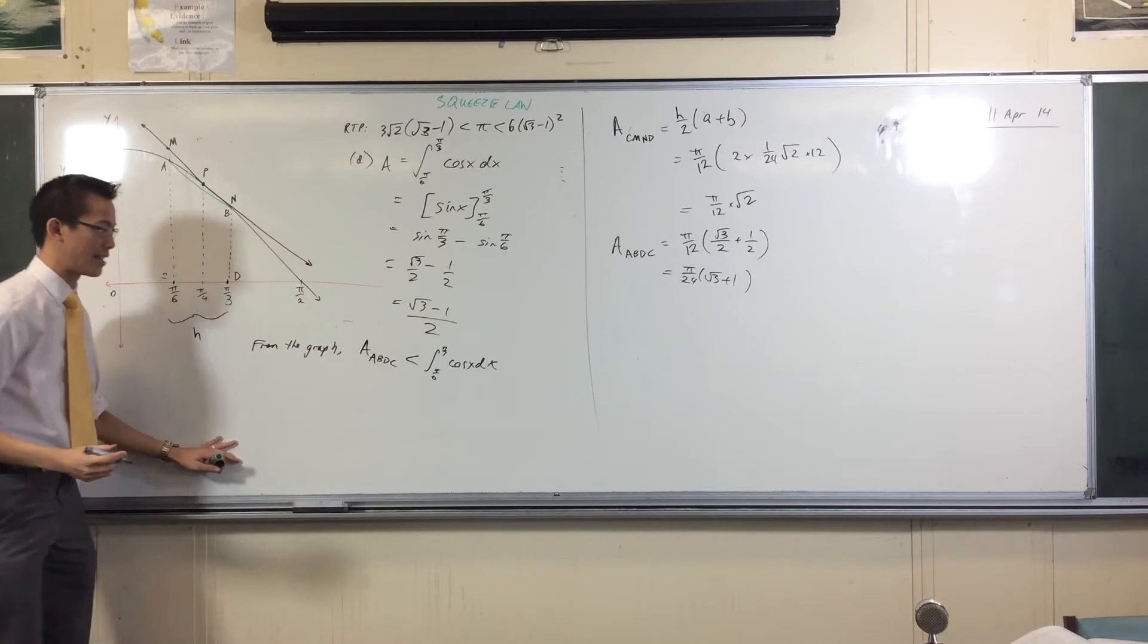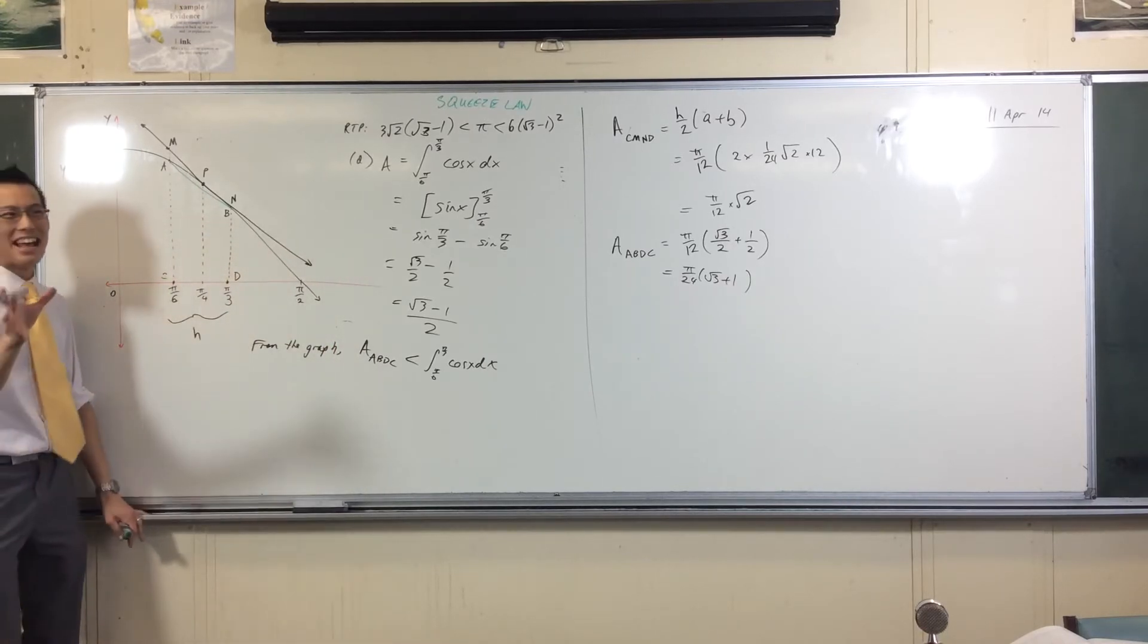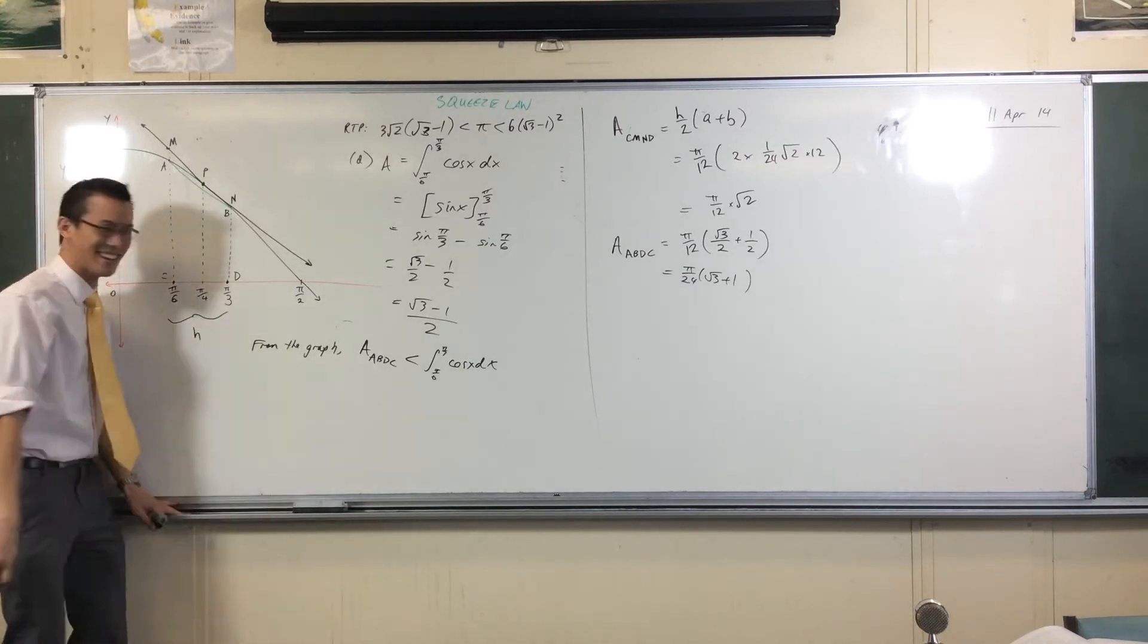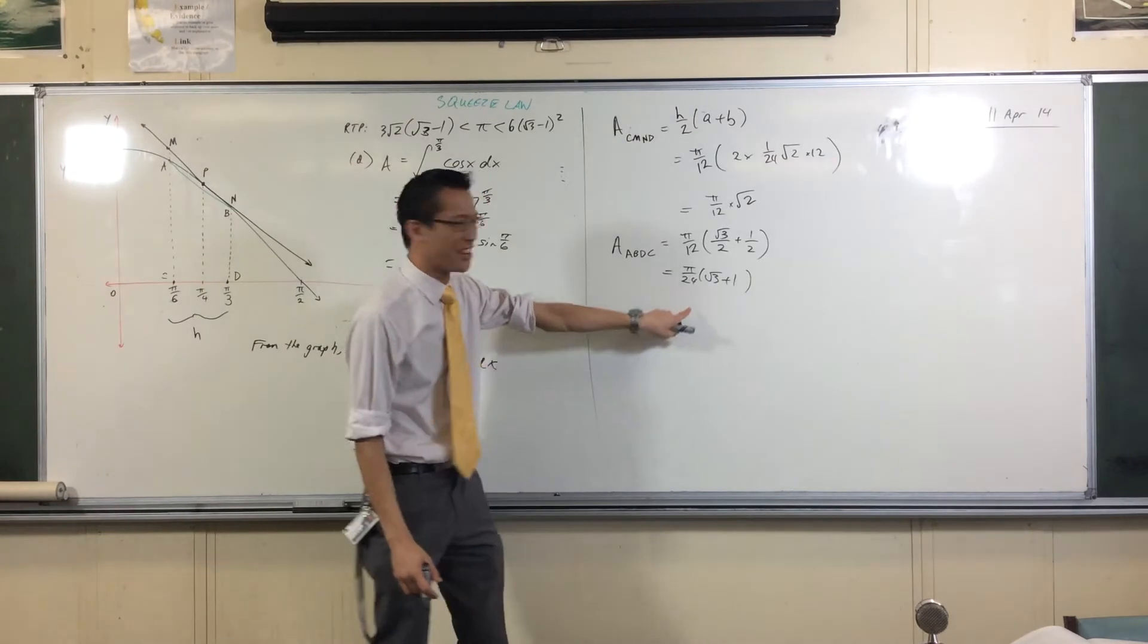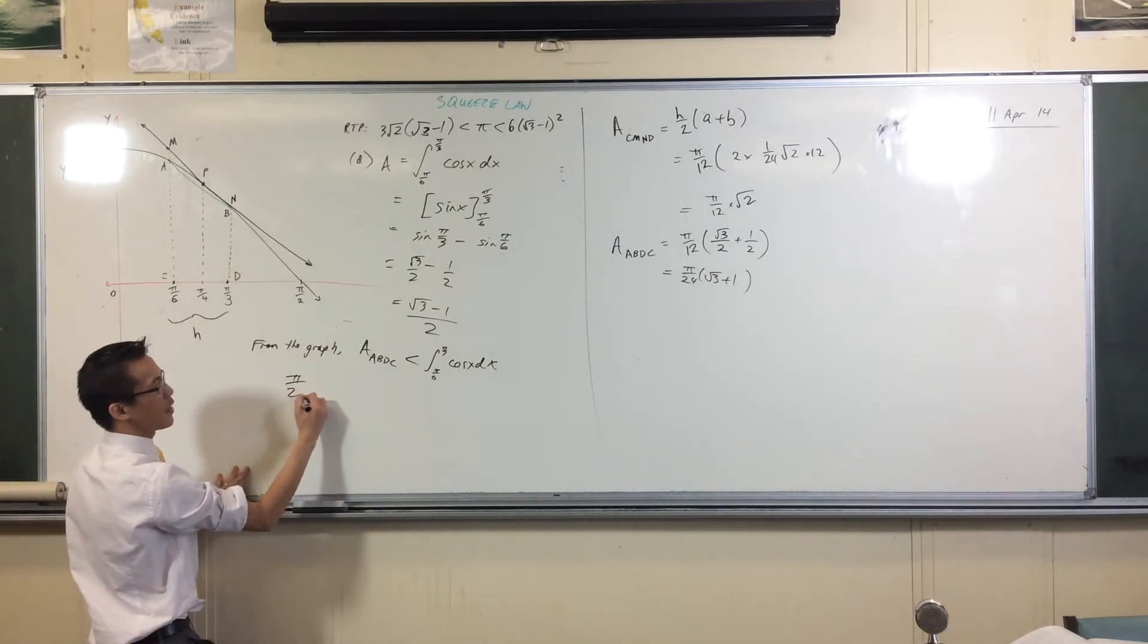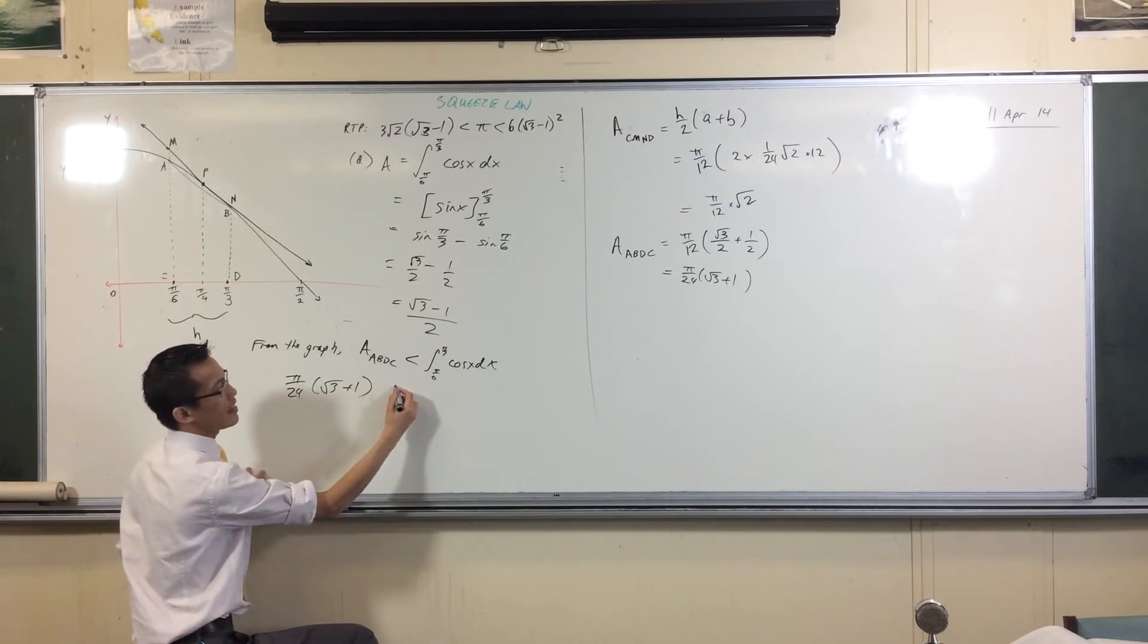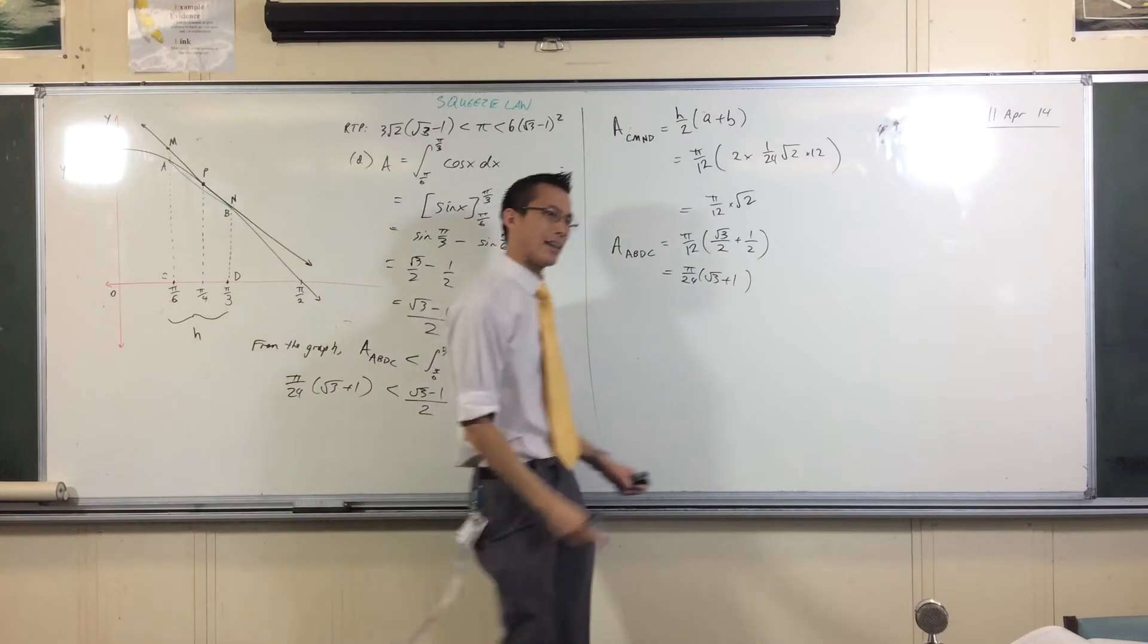Well, if you want to be fancy and sound like an extension 2 student, you can say, by inspection. I love it when 40 students write by inspection, when they're like, I don't know why this is. I'll just say by inspection. It's like, oh no, he knows our secret. We've been doing it for years. There's the area of trapezium ABDC. π/24(√3 + 1) is less than (√3 - 1)/2.